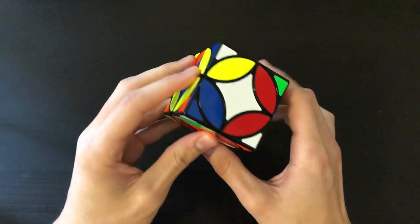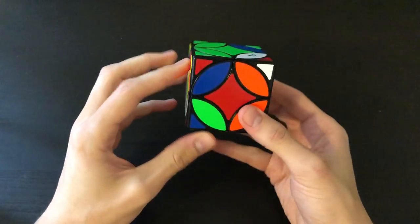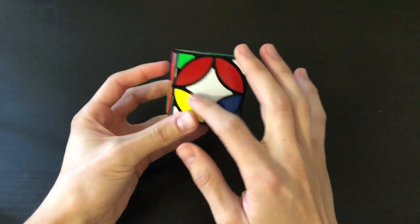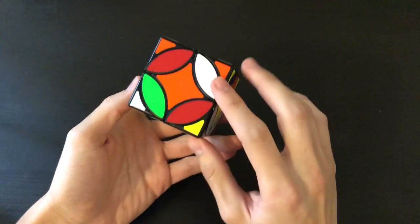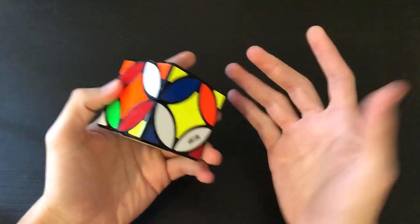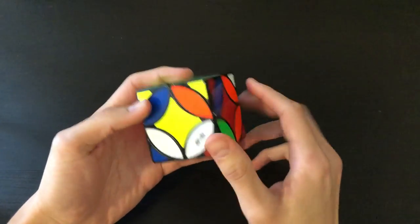Alright, so here we have the puzzle fully scrambled. It looks really nice. I really like the look of this centerpiece right here. It really kind of resembles a coin, I guess, like an ancient coin, hence the name, the G Ancient Coin Cube. But let's go ahead and do a very quick solve.